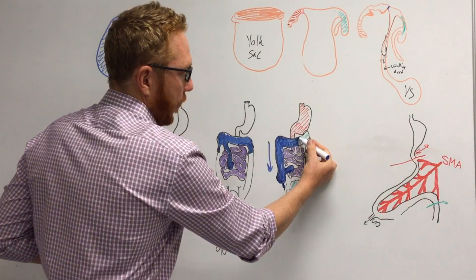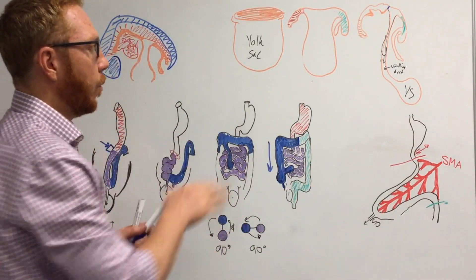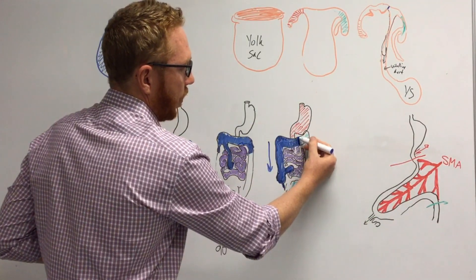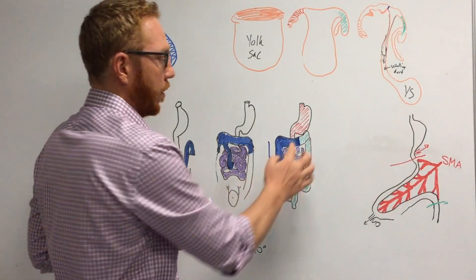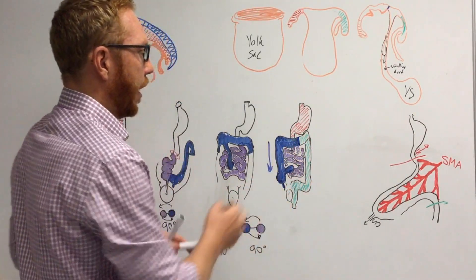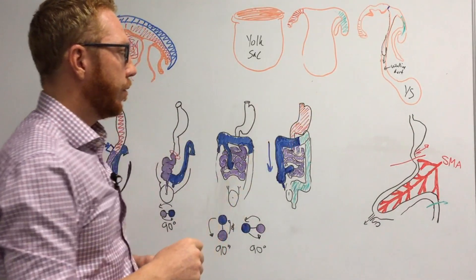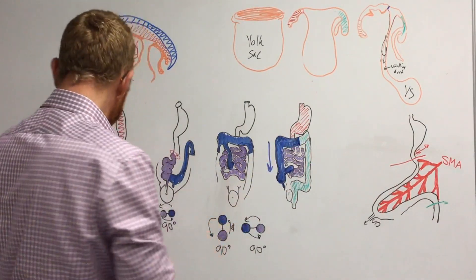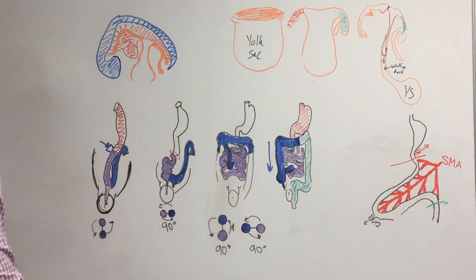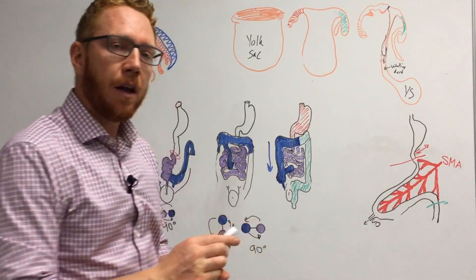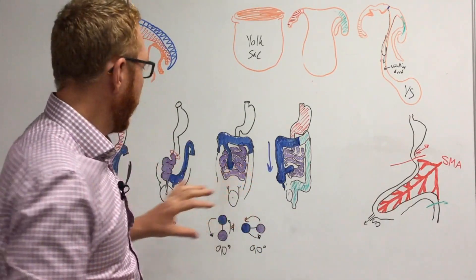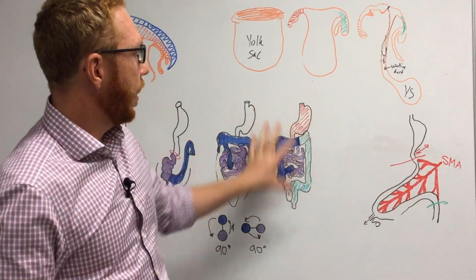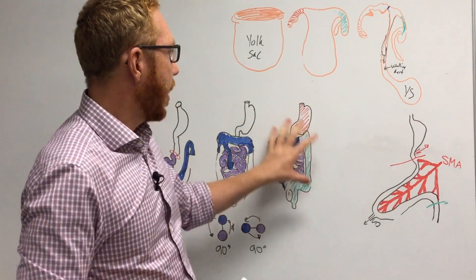The 270-degree rotation results in the caudal loop framing the outside. The cecum sits down in the right iliac fossa with the appendix developing, probably retrocecal or posterior. We have a short segment of ileum from the caudal loop, the ascending colon, and the midgut ends two-thirds of the way across the transverse colon. In the green is all the hindgut, in red all the foregut, and the purple cranial intestinal loop sits deep inside.